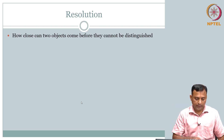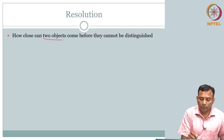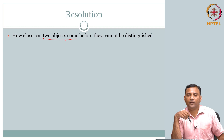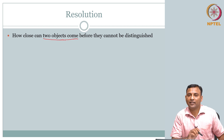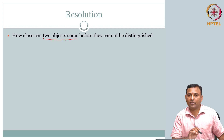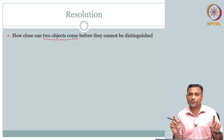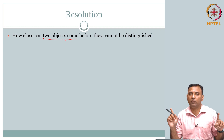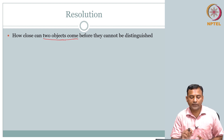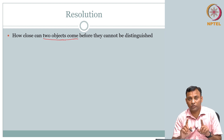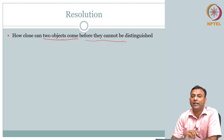How close can two objects come? I did not say the units. In the imaging system, at least what we have covered so far, our coordinate is space. So in space, how close can two objects come? It can come in the x direction, it can come in the y direction — x and y were the spatial variables. So, how close can two objects come in space before they cannot be distinguished?